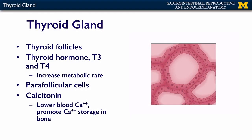The other cell type within the thyroid gland are the parafollicular cells. These cells exist in between the thyroid follicles, and they secrete a hormone called calcitonin. Calcitonin lowers blood calcium. So if your blood calcium is too high, calcitonin is secreted by the parafollicular cells, which then lowers your blood calcium levels by promoting the storage of calcium into bone.